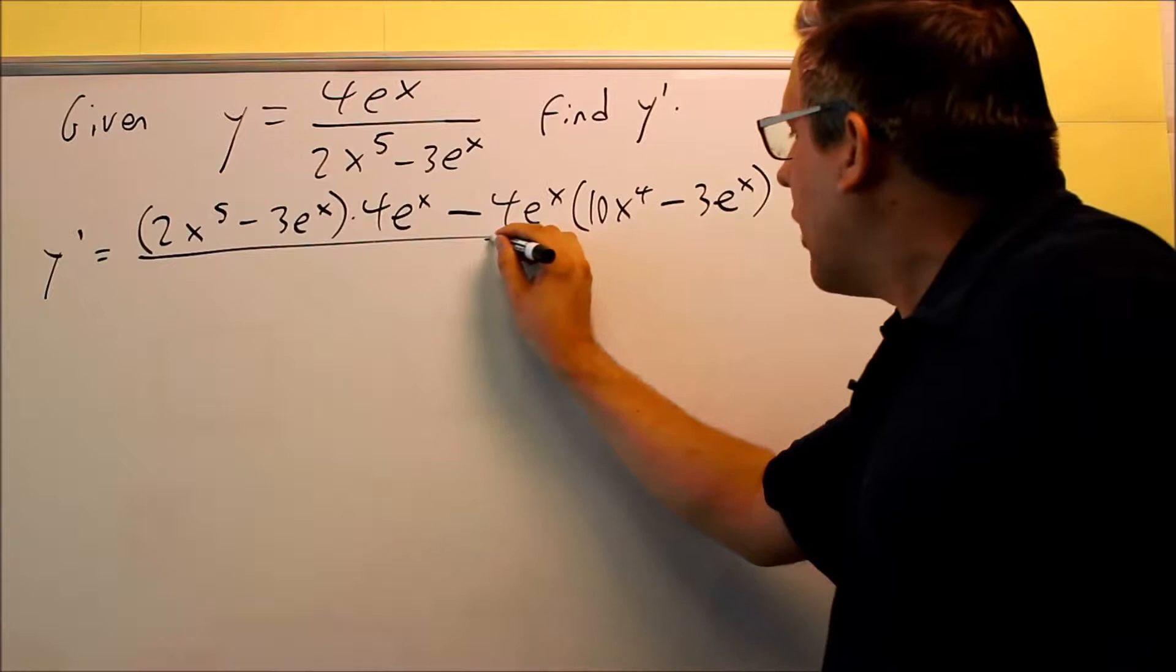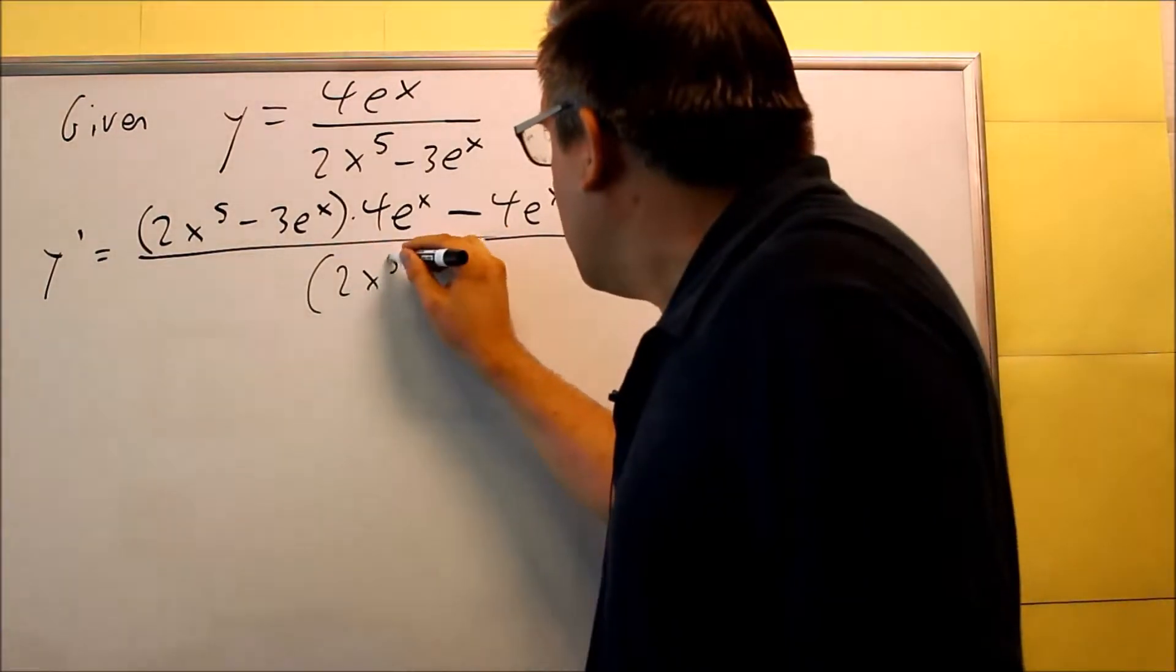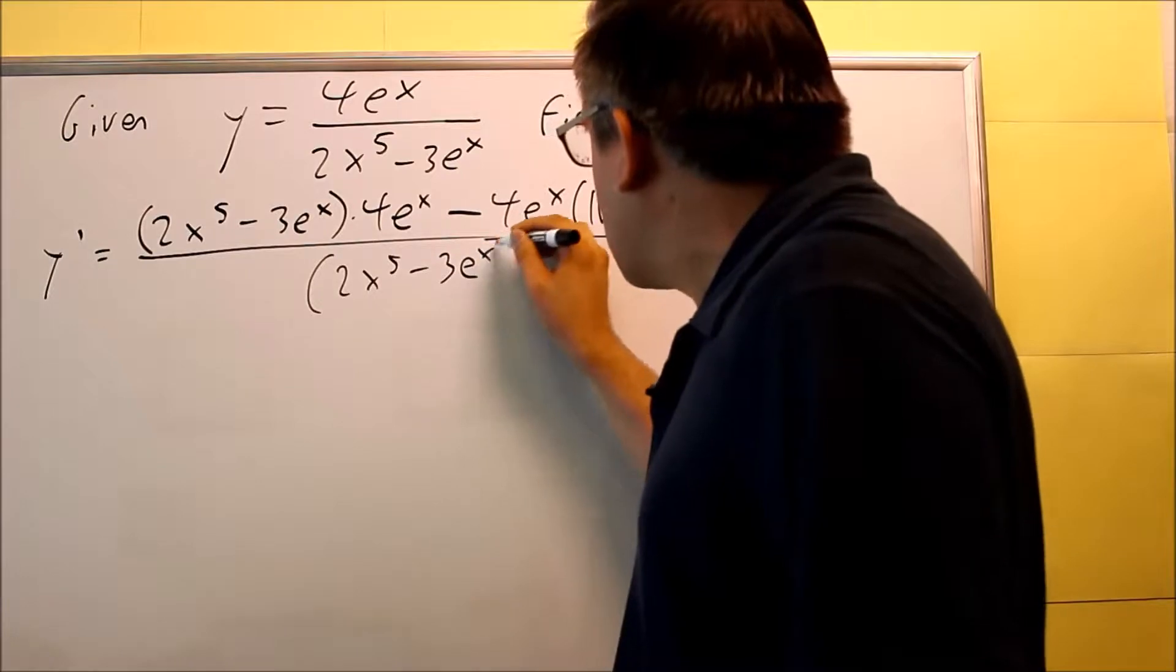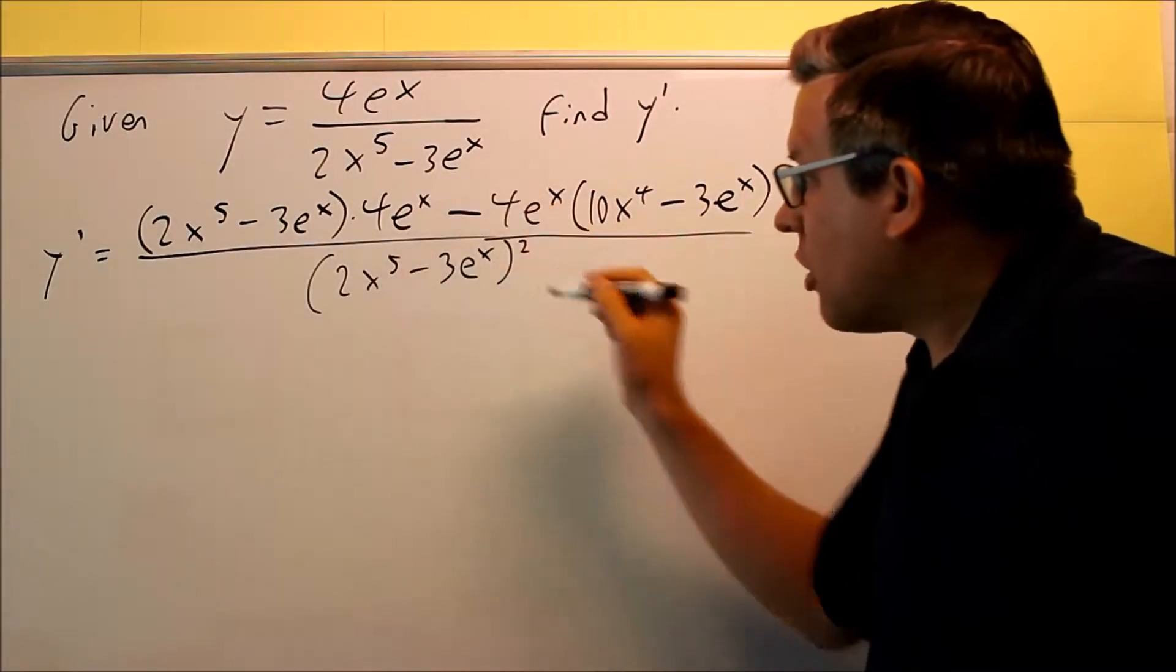And so that would be the derivative on top. On the bottom, we have to do this squared, following our quotient rule. The bottom part is always squared.